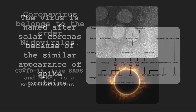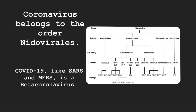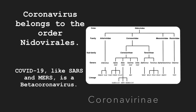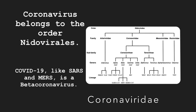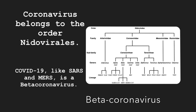Let's talk about classification. Coronavirus belongs to the order Nidoviralis, family Coronavirinae, and subfamily Coronaviridae. COVID-19, like SARS and MERS, is part of the genera beta coronavirus.